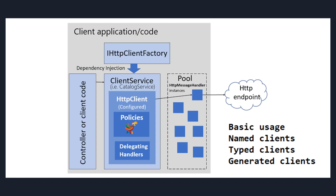HttpClientFactory was introduced in .NET Core 2.1 and it manages a pool of HTTP clients. Whenever you need an HttpClient, you just request it from the pool to make your Web API calls. It also handles the socket exhaustion and DNS change issues behind the scenes. It also provides Polly-based extension methods like retries and circuit breakers — meaning if you don't get results from your Web API the first time, you can retry and get results on the second or third attempt.